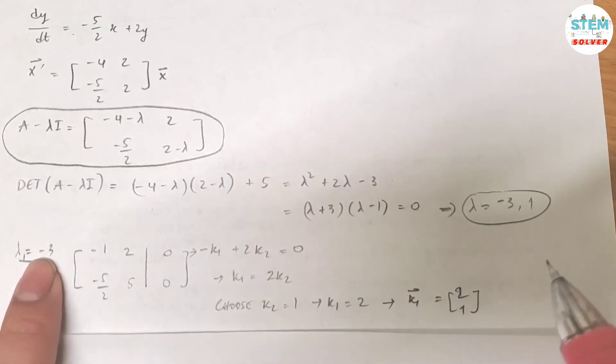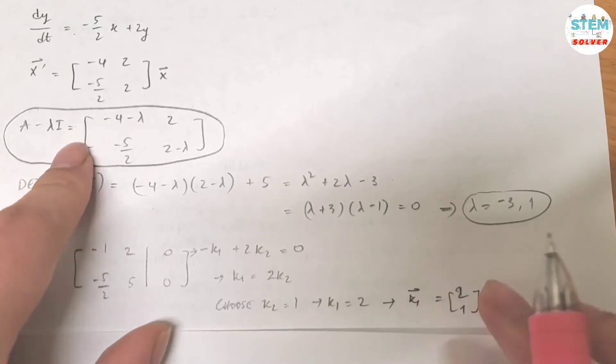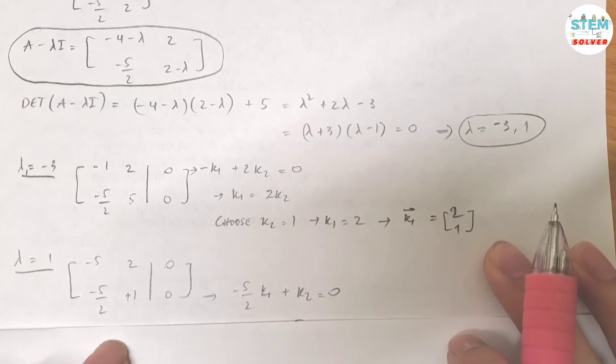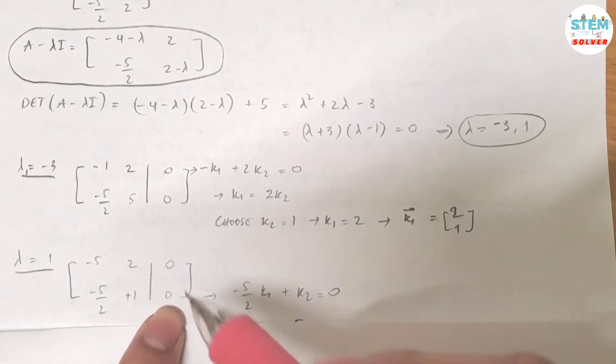Now you're going to do the same thing for lambda equals 1. Plug it into here. You will get another matrix which is this matrix augmented with 0. Again, if you simplify, reduce this down to an identity matrix, you will get infinite solution.